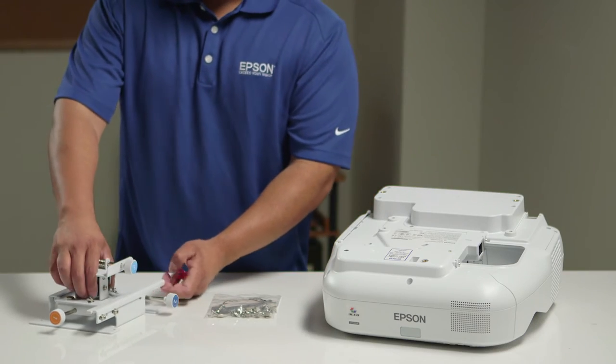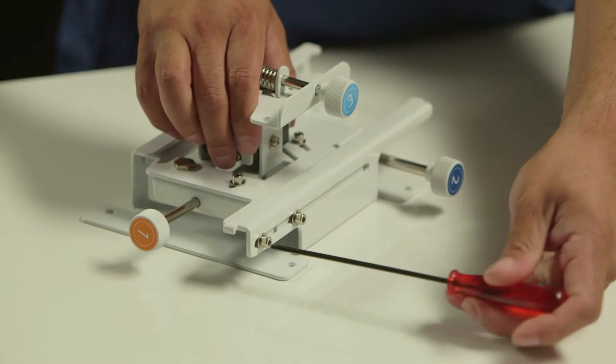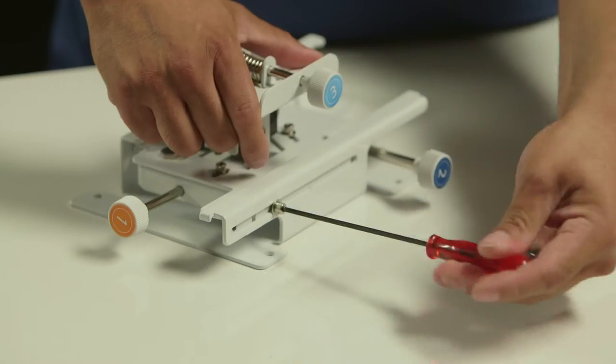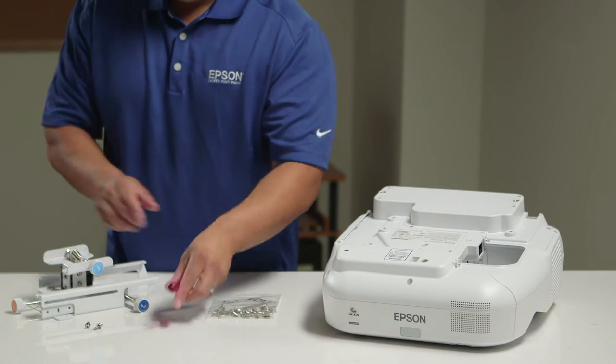Let's begin by attaching the projector plate to the projector. First, we need to separate the mounting plate from the three-point adjustment axis. We do so by removing two screws and sliding the plate off.